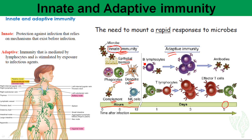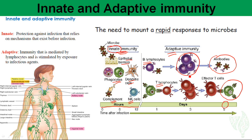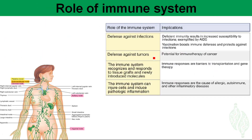B lymphocytes and T lymphocytes are the major cell types in the adaptive immune response. T cells directly kill bacteria, viruses, and infected cells, while B cells produce antibodies to kill pathogens. Both B and T cells undergo clonal selection. These are the basic differences between the innate and adaptive immune systems.